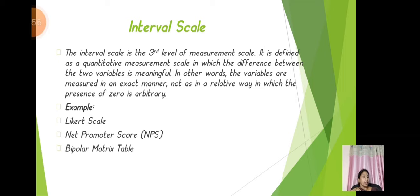Interval scale — the term itself indicates there will be an interval. It is defined as a quantitative measurement scale in which the difference between two variables is meaningful. In other words, the variables are measured in an exact manner, not in a relative way, in which the presence of zero is arbitrary. Examples include the Likert scale, net promoter score, and bipolar matrix table — all of which we will discuss in depth in the class session.